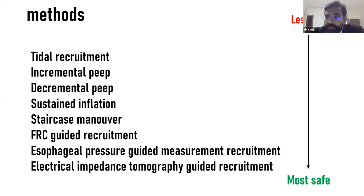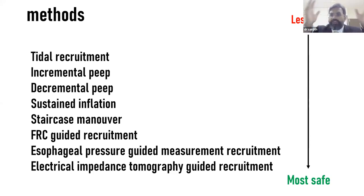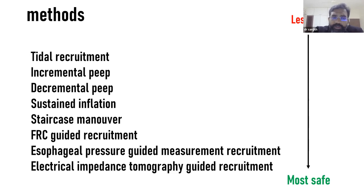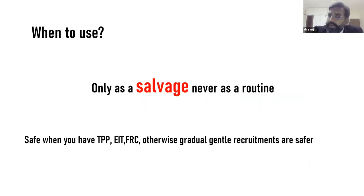Electrical impedance tomography (EIT) allows visualization of air distribution throughout the entire lung, enabling real-time guidance of recruitment. FRC-guided, esophageal pressure-guided, and EIT-guided recruitment are all significantly safer than staircase, sustained inflation, decremental, incremental, and tidal recruitment. Recruitment should only ever be used as a salvage — never routine. Simply maintaining a slightly higher PEEP will recruit patients more safely than bedside maneuvers.